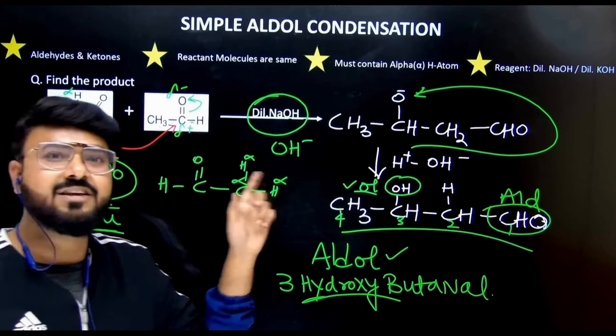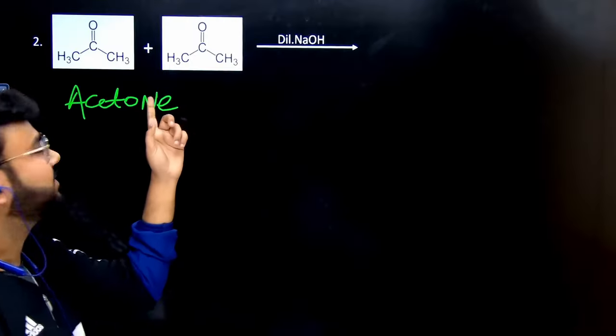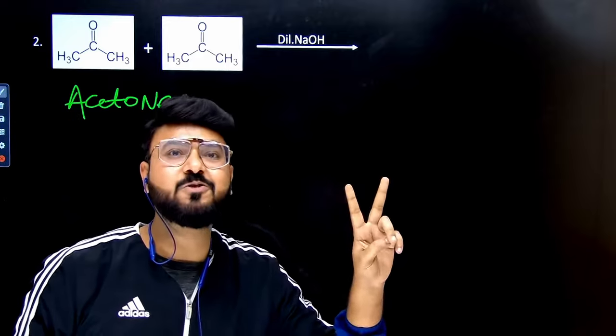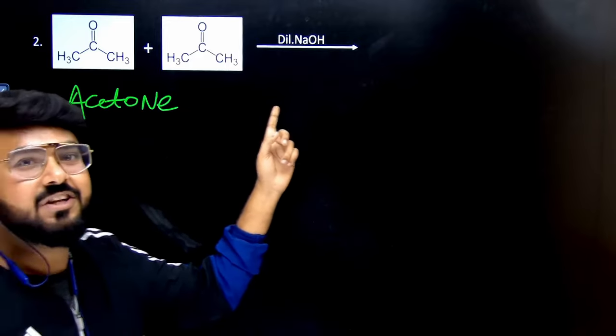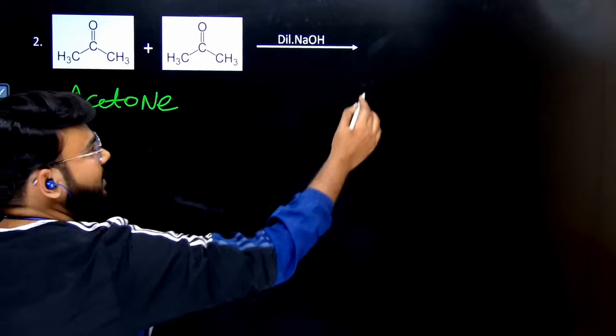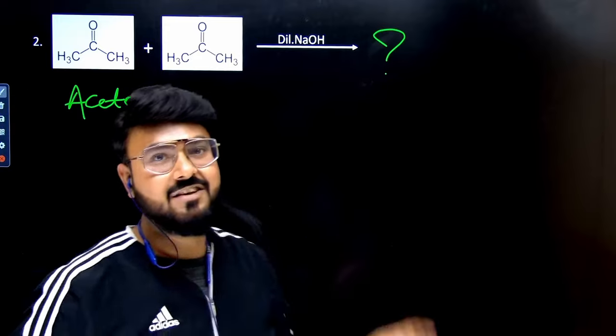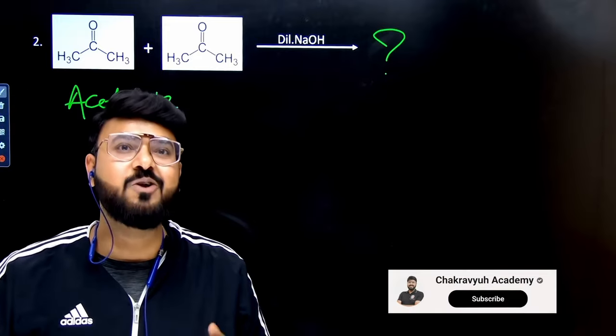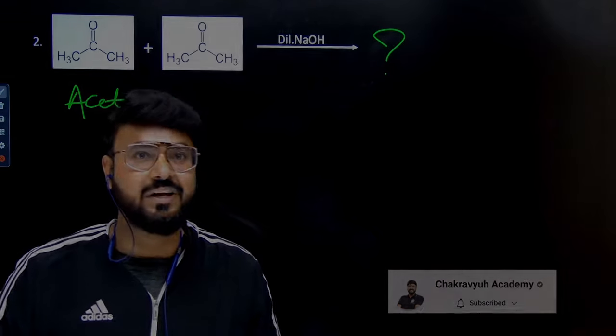Now you can try the second question as homework. So you will try this acetone. Two molecules of acetone we have taken and you will carry out the simple aldol condensation. So drop down the answer, IUPAC name, in the comments below. And don't forget to share with your friends who need it.